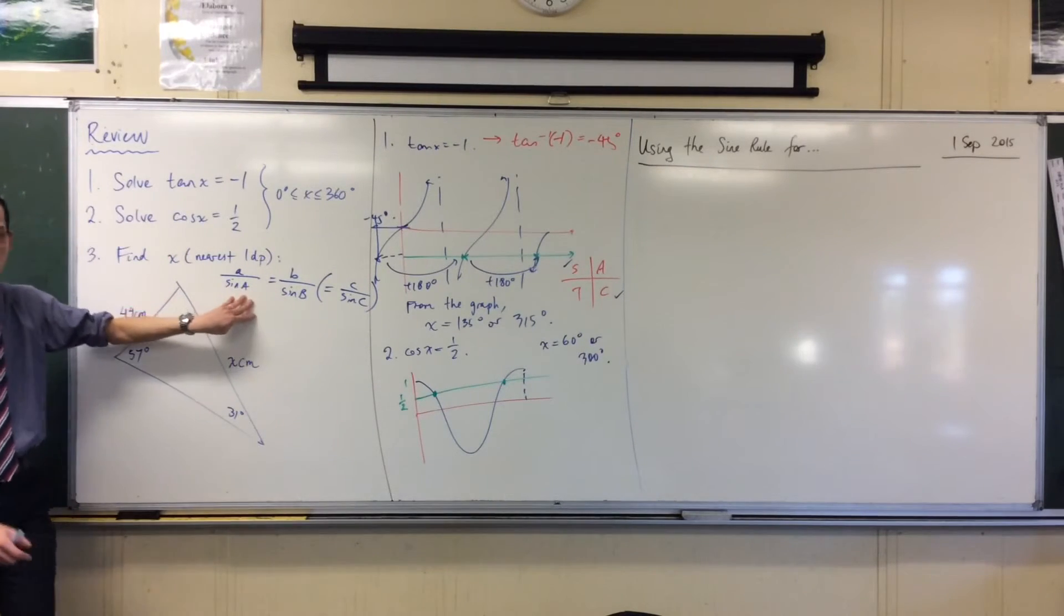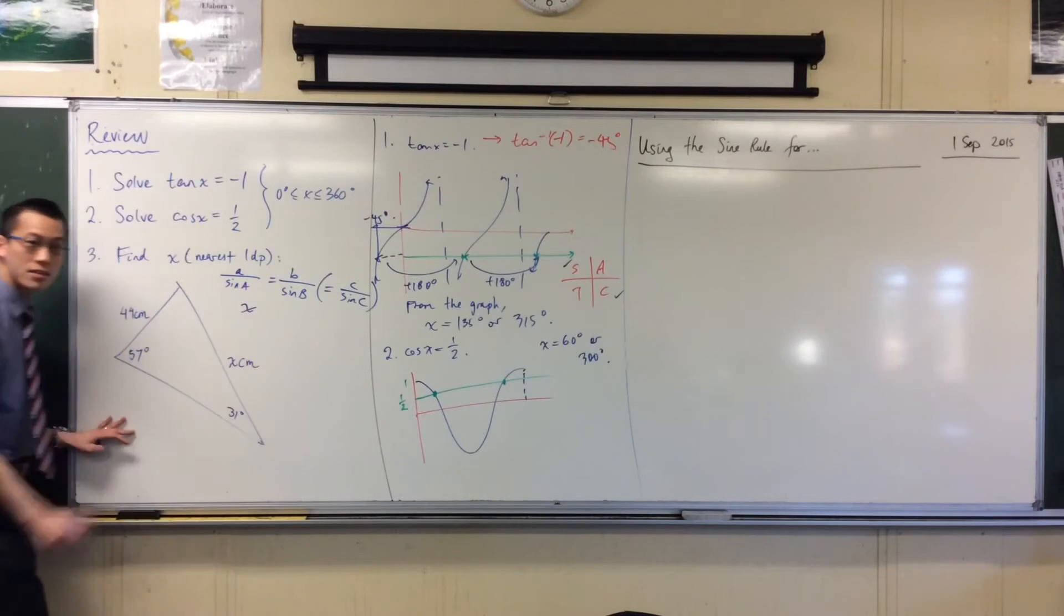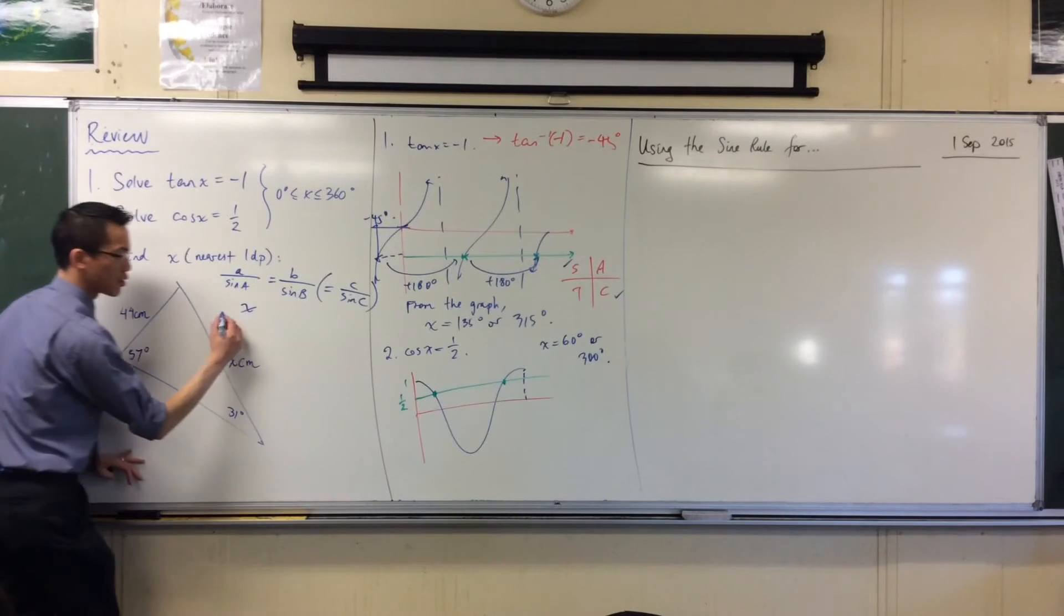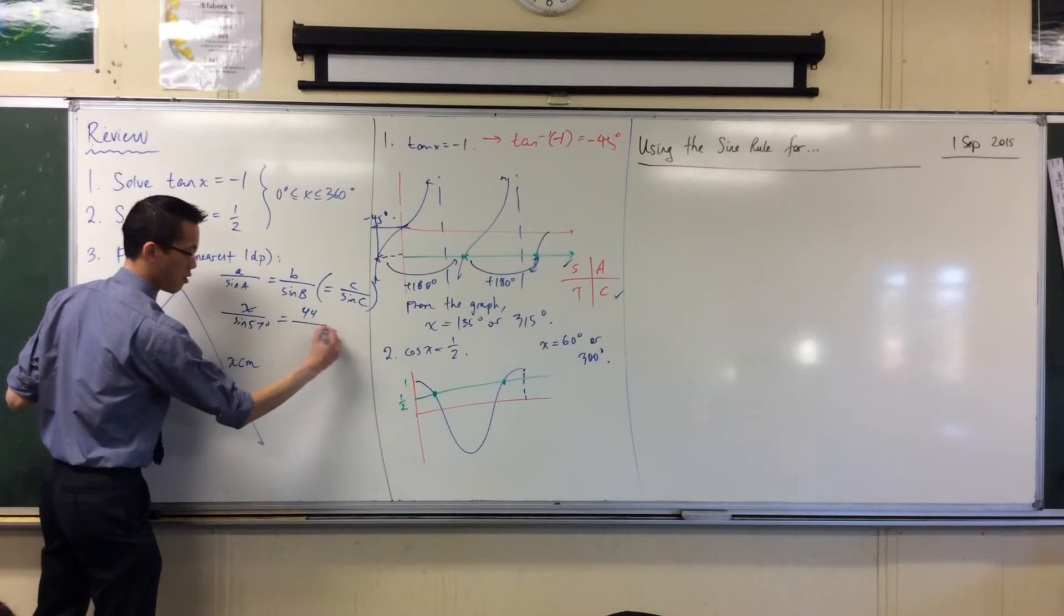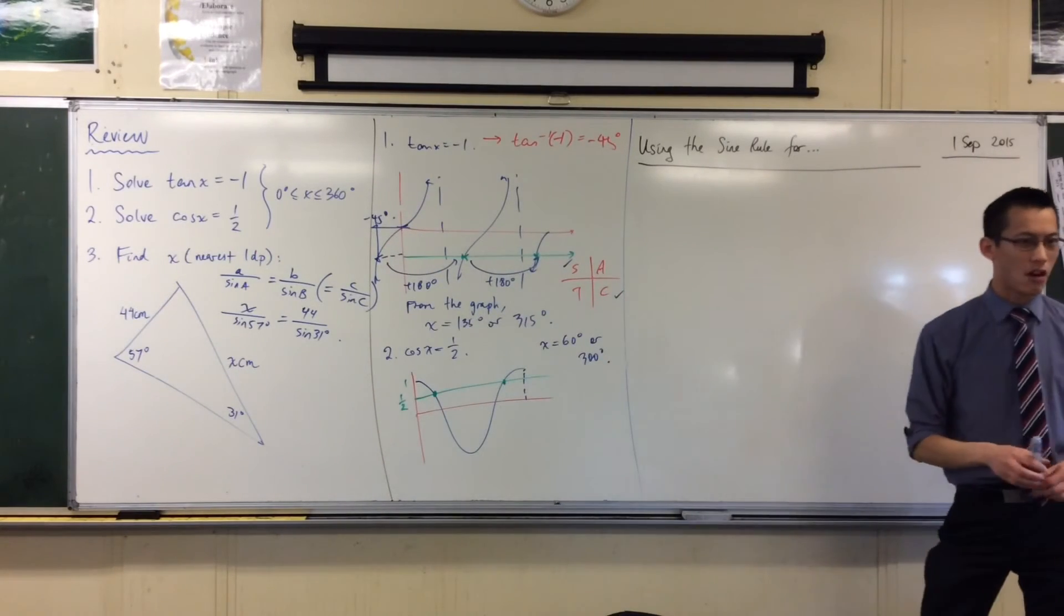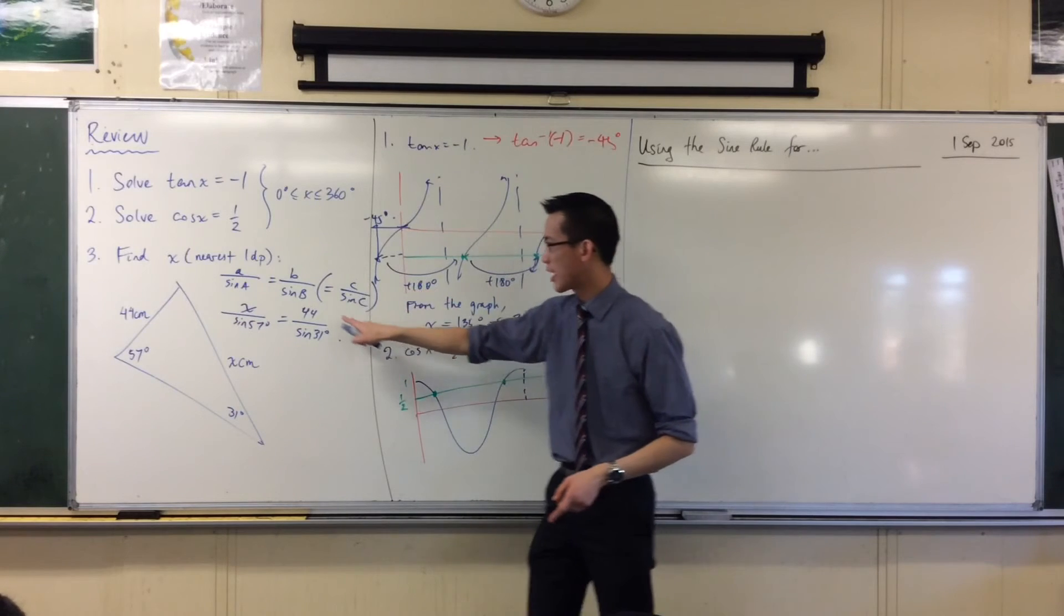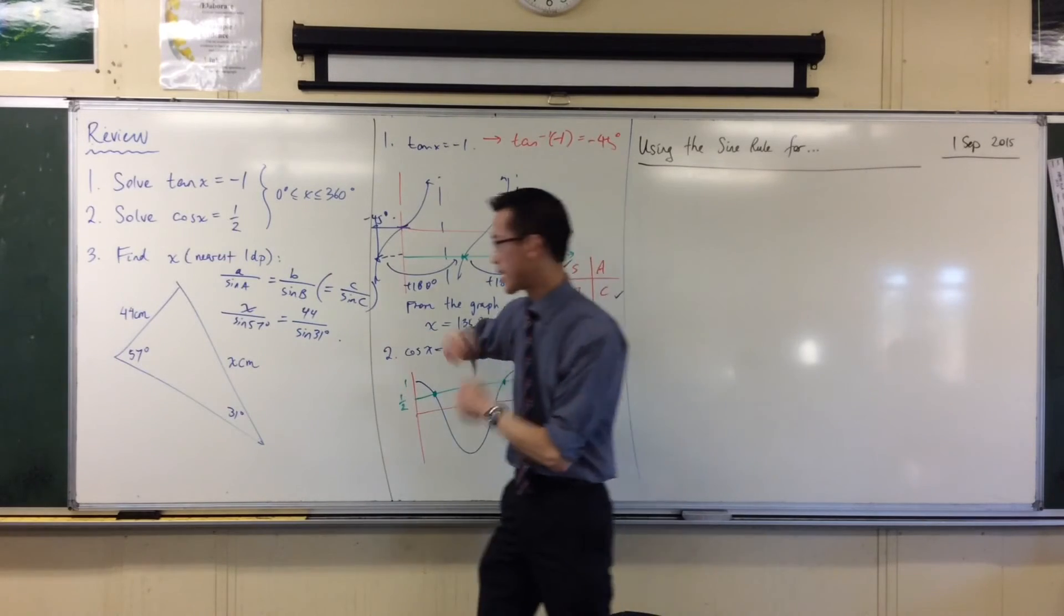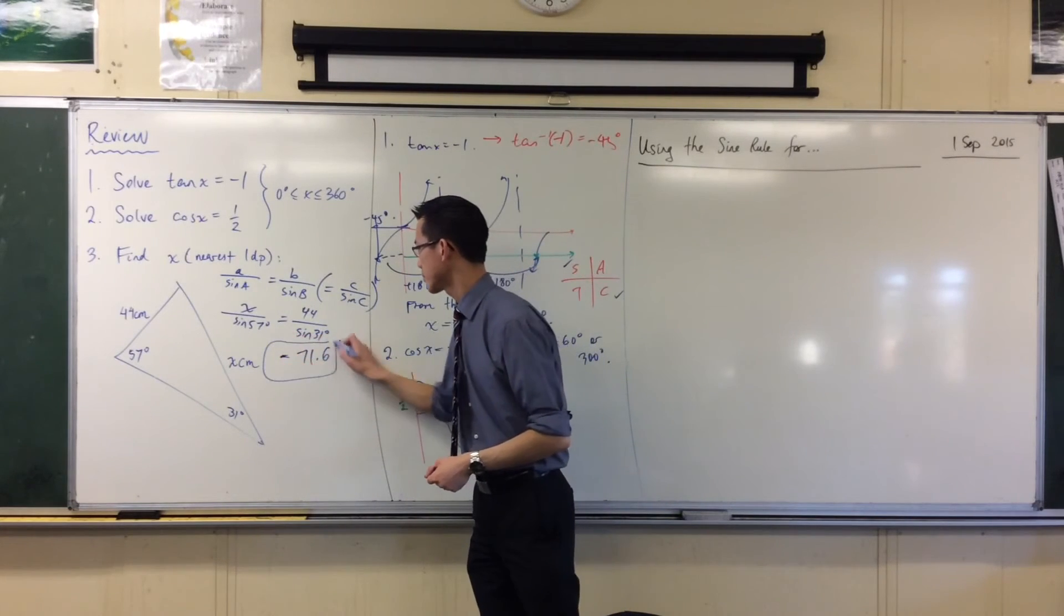Once I have the sine rule down, I'm just filling in. So here's the one I want. That's what I'm after. So I tend to put that first, so I have to do a minimum amount of rearrangement. I look at the angle that's opposite it. So that's sine 57. And then I line up the other pair. So I've got 44 on sine 31. From there, what do I need to do to get x on its own? To make x a subject? 44 times sine 57. Yeah, good. I'm going to multiply this guy across. So I'm going to get into my calculator. I'm going to have 44, sine 57, on sine 31. Someone already calculated for me to one decimal place. 71.6.